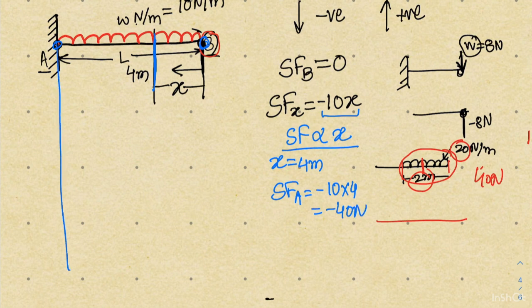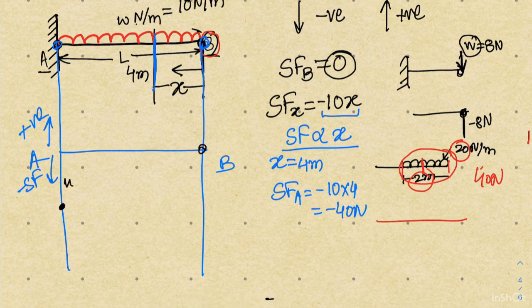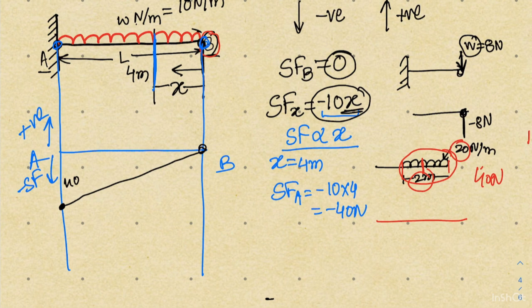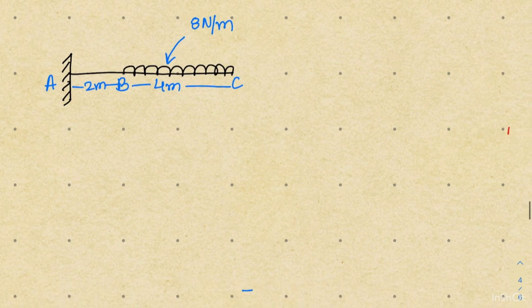If we draw the shear force distribution with the beam A-B, upward is positive and downward is negative. The shear force at point B is 0 and at point A it is minus 40 newton. The distribution is a linear curve because shear force is proportional to x. This straight line represents the shear force variation when moving from point B towards point A, completing the shear force diagram for this first problem.